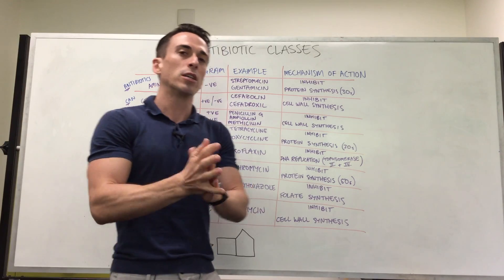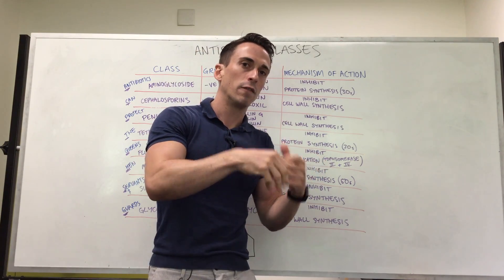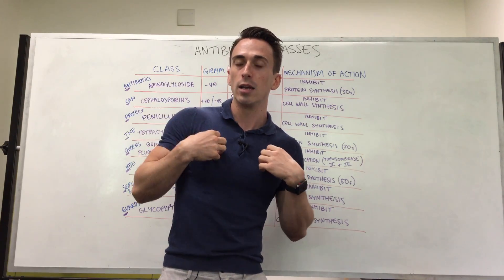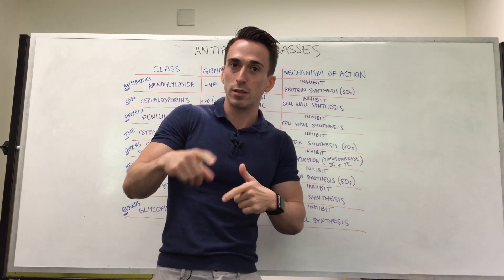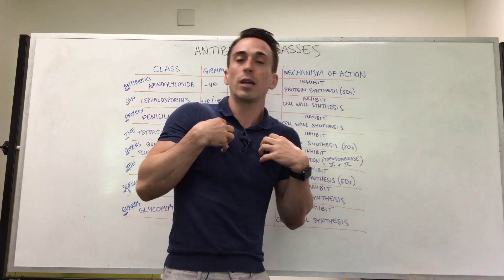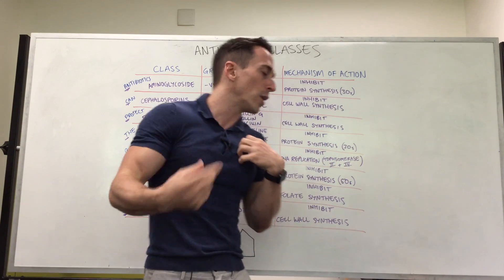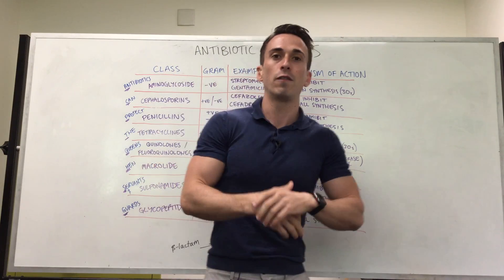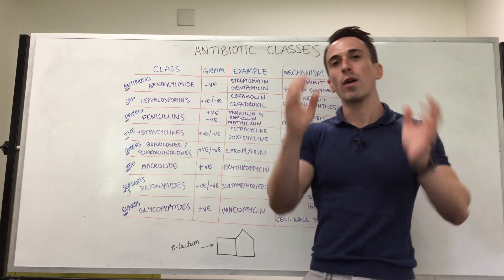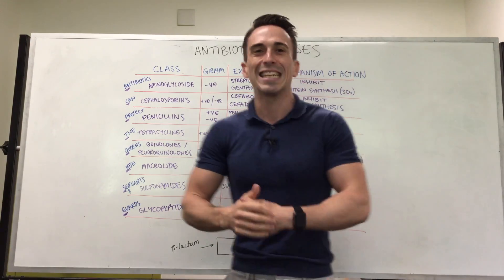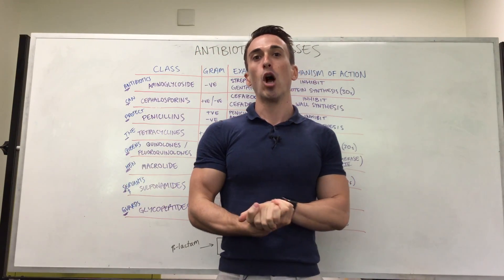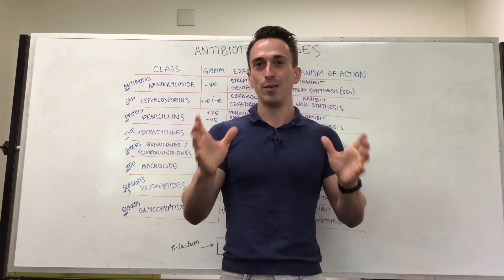Sulfonamides inhibit folate synthesis. Bacteria can make their own folate for metabolism, growth, and development, but humans cannot — we must get folate from our diet. So we exploit this difference by inhibiting the enzyme that allows bacteria to make folate. Since we don't have that enzyme, blocking it won't harm us but will kill the bacteria. Finally, G stands for glycopeptides, which are gram-positive specific. Vancomycin is an example, and it also inhibits cell wall synthesis.